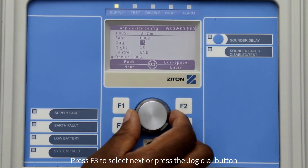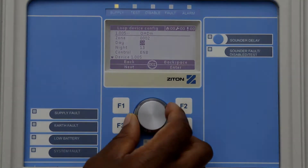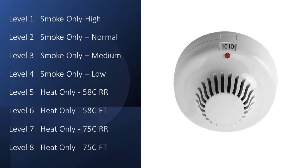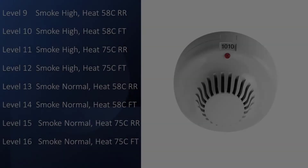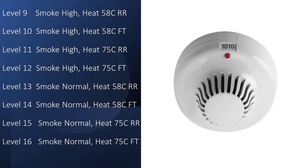For a multi-sensor there are 27 possible profile settings. Profile number one is a smoke-only profile and is the most sensitive smoke option. Profile number four is a smoke-only profile and is the least sensitive smoke option. Profiles numbers 5 to 8 are heat-only options. Profiles 9 to 27 will activate in a fire condition with either smoke or heat.